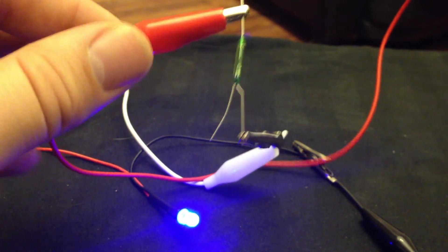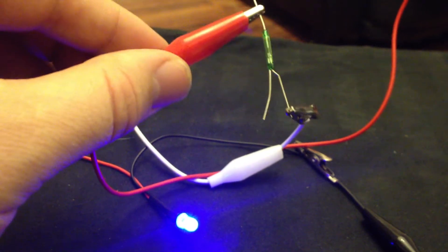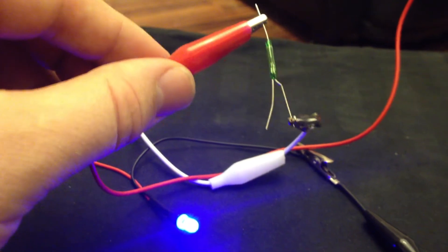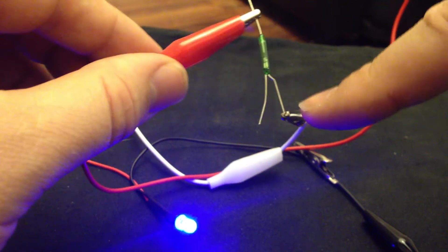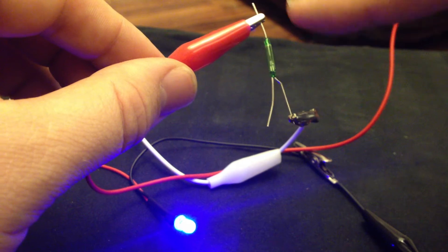This is an NC and also NO reed switch. It's very rare because it has three prongs coming out of it. Most reed switches you find on the internet will have two, and those will be normally open.